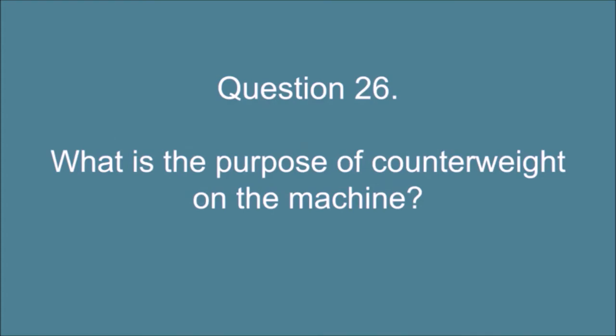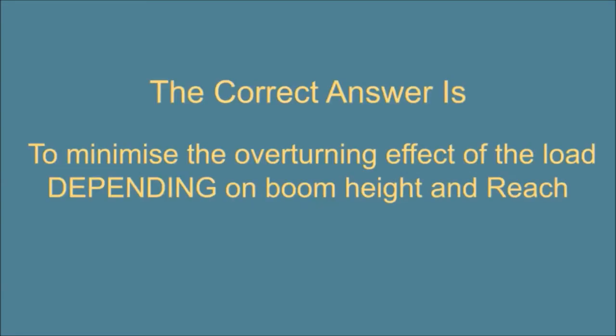Question 26. What is the purpose of counterweight on the machine? The correct answer is: To minimize the overturning effect of the load depending on boom height and reach.